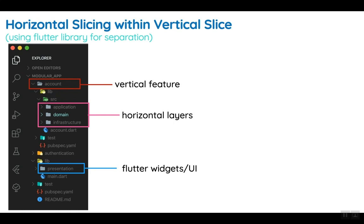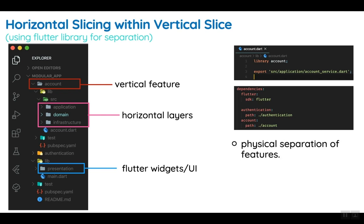This setup would be duplicated across all the features that are part of this application. As you can see, we now have physical separation because each feature is created as a Flutter library. Since it is created as a Flutter library, we now have the ability to export or expose only those aspects of this feature that the other features would need, or that our Flutter application's UI or widgets would need. All of the account feature's internals wouldn't be exposed — we have control over what is exposed.